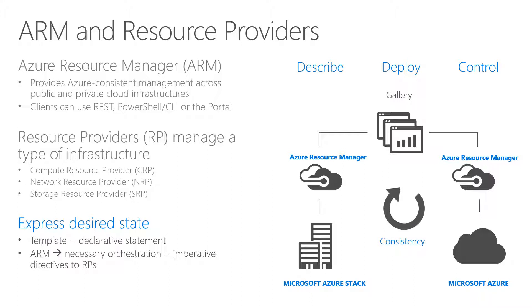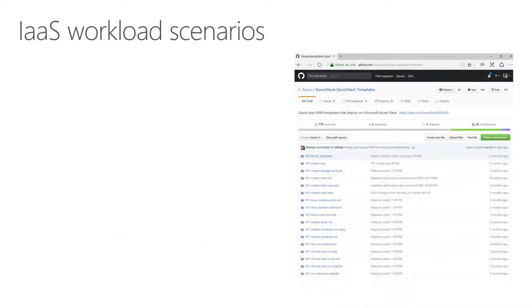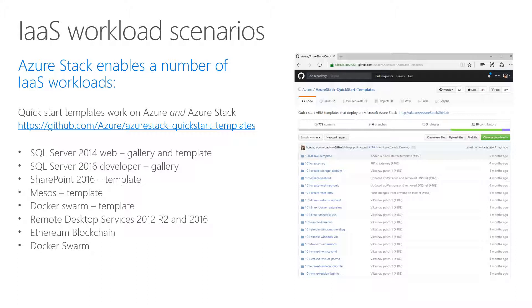We can use the same templates from the same gallery to deploy something to Azure and to Azure Stack — the ARM layer is consistent. You can go to GitHub into our Azure Stack Quick Start Templates repository and find a broad set of examples for SQL Server, SharePoint, Remote Desktop Services, and a lot more, to use as a foundation to build your own ARM templates — for very simple deployments like deploying a virtual machine, or more complex things like a fully-fledged Exchange farm or a Remote Desktop Services farm.